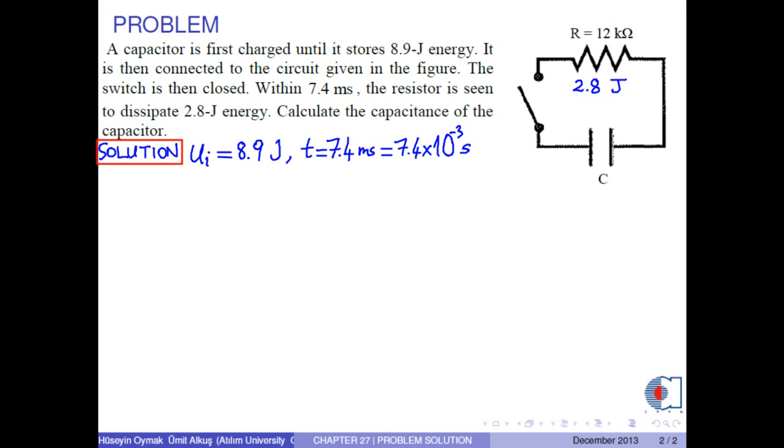First, we find the final energy on the capacitor by the formula: initial energy minus the energy dissipated by the resistor, 2.8 Joules. Initial energy is 8.9 Joules. Therefore, final energy on the capacitor is 6.1 Joules.